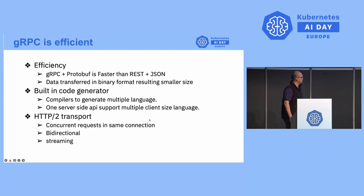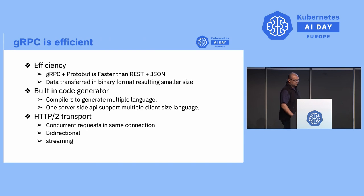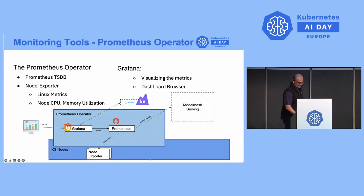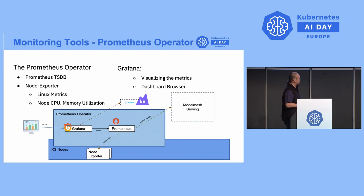gRPC is the main API for Model Mesh, which is why we keep talking about it. The gRPC protocol is generally faster than REST plus JSON because gRPC is built on HTTP/2 and can send payloads in binary format. The Prometheus operator provides many things by default: Prometheus DB, the node exporter which collects Linux metrics on your Kubernetes cluster, and Grafana for visualizing metrics in your browser.